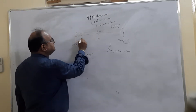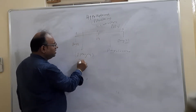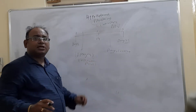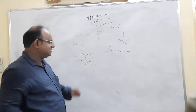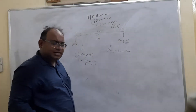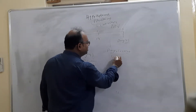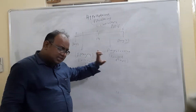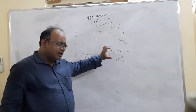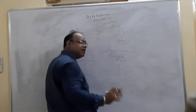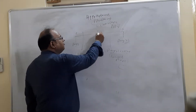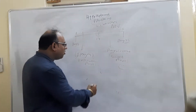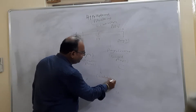Day 1 to day 14 is called the follicular phase — named because of the maturation of the ovarian follicles. Day 14 to day 28 is called the luteal phase, because the name comes from corpus luteum. Day 14, when actual ovulation takes place, is called the ovulation phase.